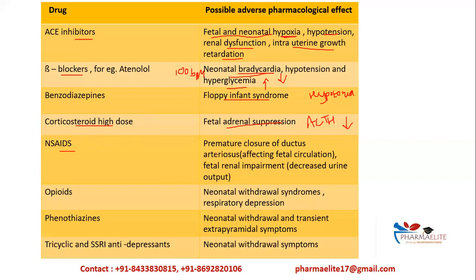NSAIDs — non-steroidal anti-inflammatory drugs — cause premature closure of the ductus arteriosus. This premature closing affects fetal blood circulation. NSAIDs also cause fetal renal impairment; the renal functions of the fetus inside the womb are affected, and renal impairment can occur.